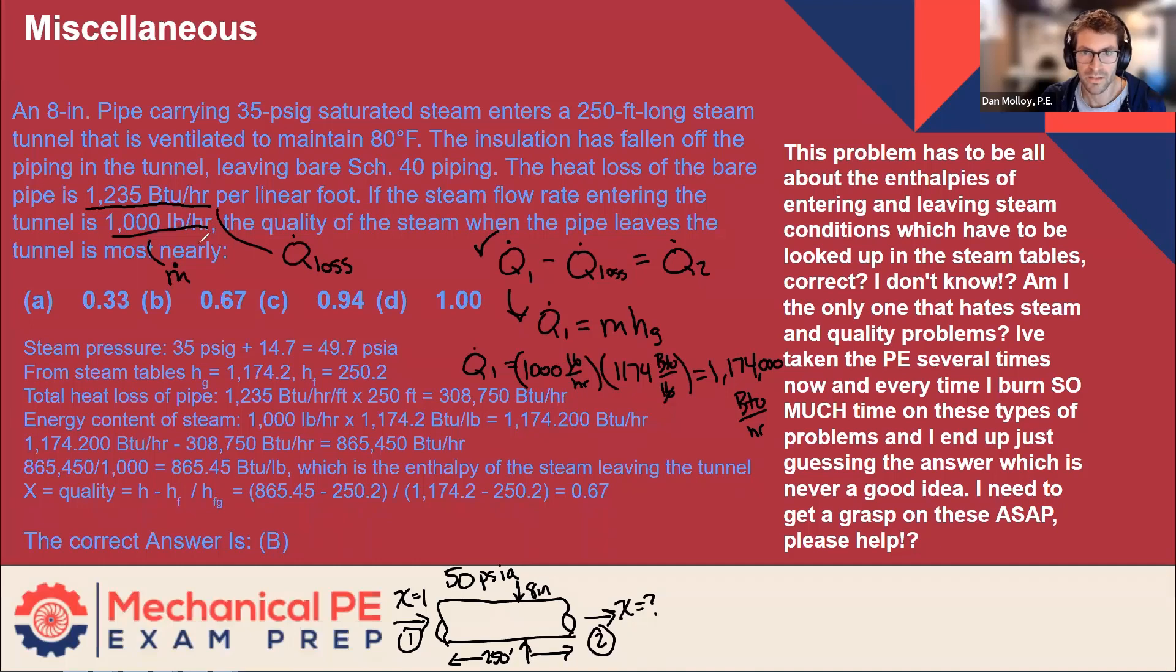Now for the second term, Q loss, we know it's 1235 BTU per hour per linear foot. So let's go a little more detail there. Q dot loss. 1235 BTU per hour per foot, both in the denominator. Times the number of feet. 250 feet is the length of pipe. So for every foot, more losses. Feet cancels and we get BTU per hour, which is the right units for the losses. If we're going to be subtracting that, right, they got to have the same units.